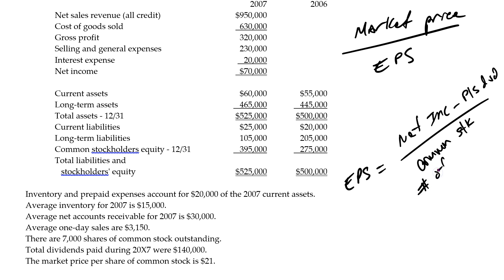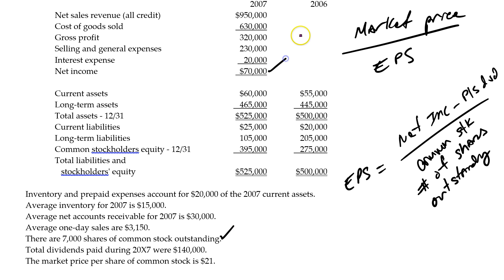Shares outstanding means how many shares are being held by investors in the secondary market — that would be primarily all of our shares unless we had treasury stock, which would reduce the number outstanding. A few things are given to us here: the number of shares outstanding and net income are right there, and there's no preferred stock.